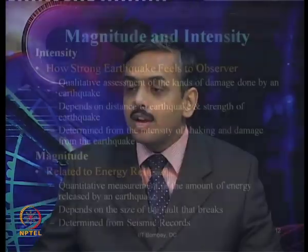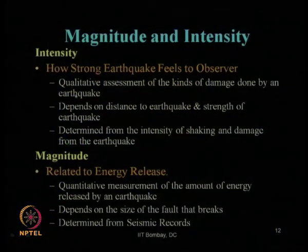He can mention it was a very big earthquake, the shaking was too much. Or he can say it was a very mild earthquake. Or he can say it was a moderate kind of earthquake — it shook the ground, but not vigorously and not mild either. That kind of qualitative statement by an observer gives us the intensity scale of an earthquake — it is a qualitative assessment of the kinds of damage done by the earthquake.